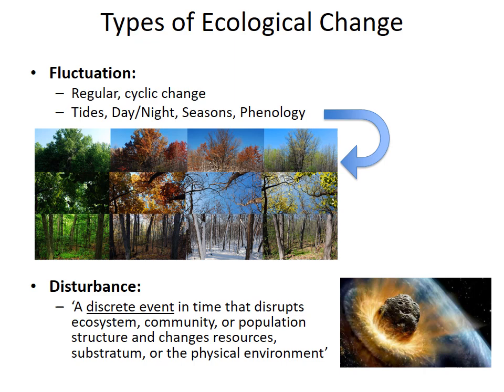Disturbance is a type of ecological change, but it's not the only type. Regular cyclic change in the environment is considered a fluctuation — things that happen on a regular basis like tides, day-night cycles, seasons, and the responses of organisms to those cycles, which we call phenology. A typical seasonal cycle of a deciduous tree going from summer to fall to winter to spring is a phenological cycle and an example of fluctuation.